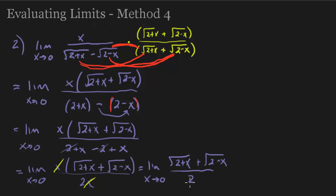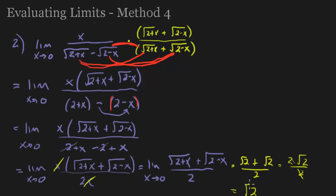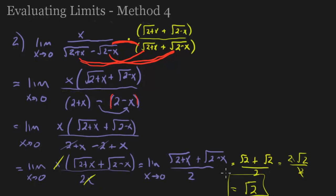All right, now 0, I can plug in, because I'm not going to get 0 on the bottom anymore. We're going to get the square root of 2 plus another square root of 2 over 2. So, that's 2 square root of 2 over 2. The 2's cancel, and you're just left with the square root of 2. And there's our answer.